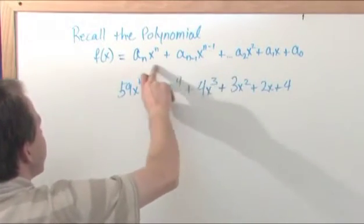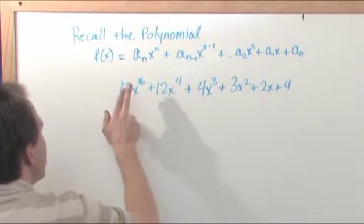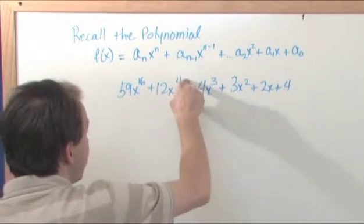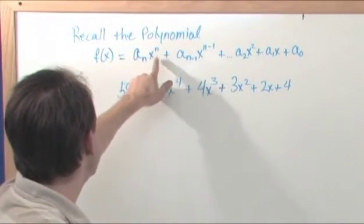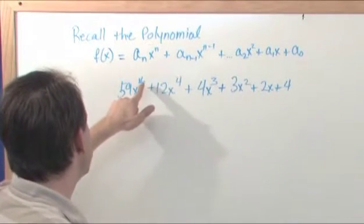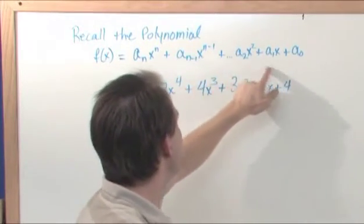So this is a general form basically saying that anything that can be written in this form with a number times the power of x plus a number times the power of x and so on. You see here n would be your highest power of x and then you'd have n minus one, so you'd have six x to the sixteenth, x to the fifteenth, x to the fourteenth, thirteenth, twelfth and so on.